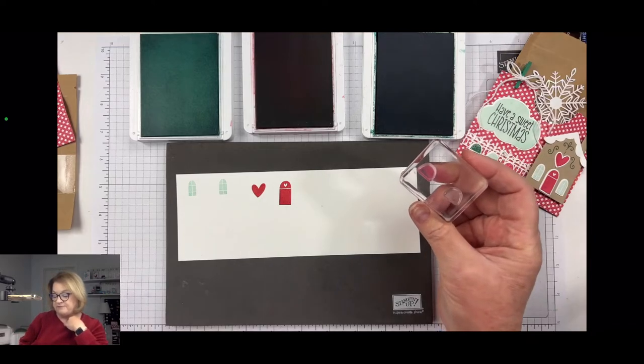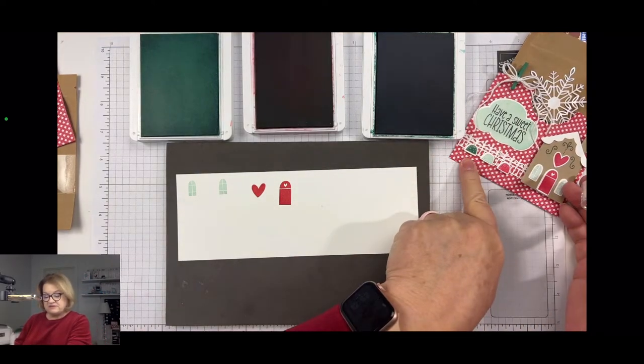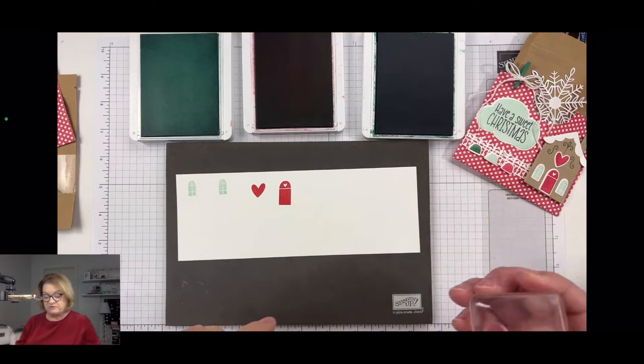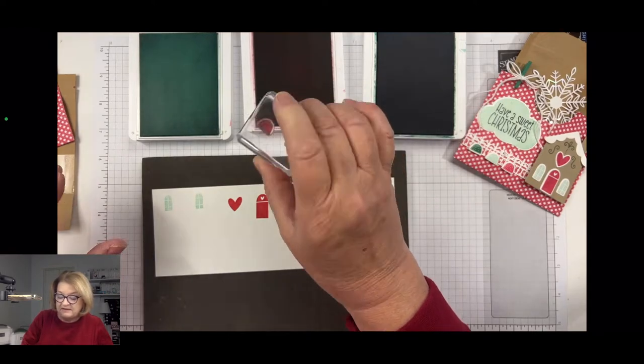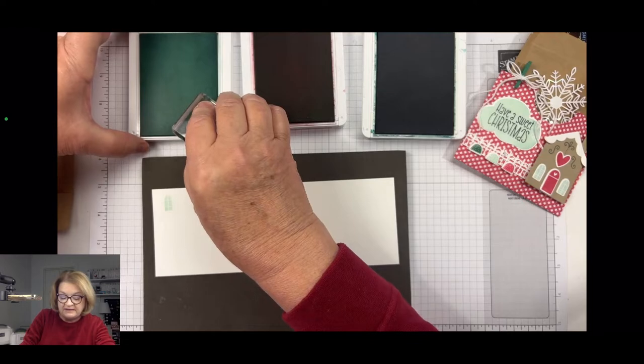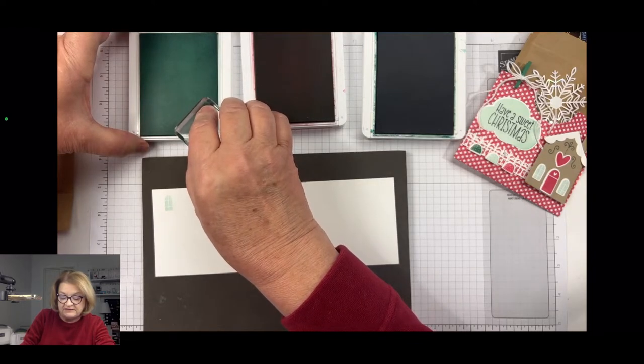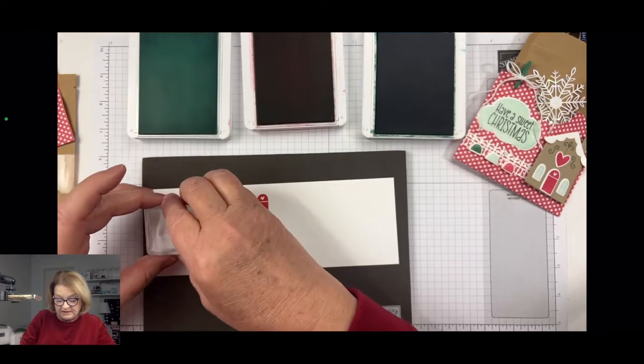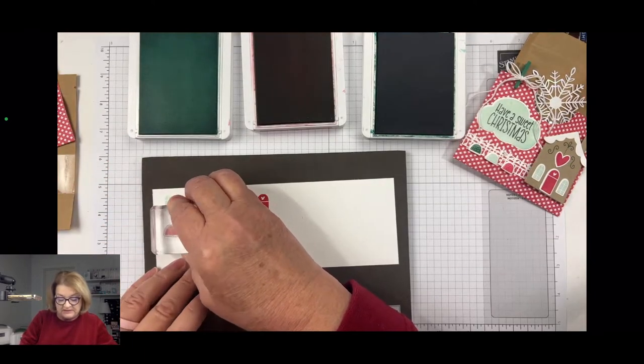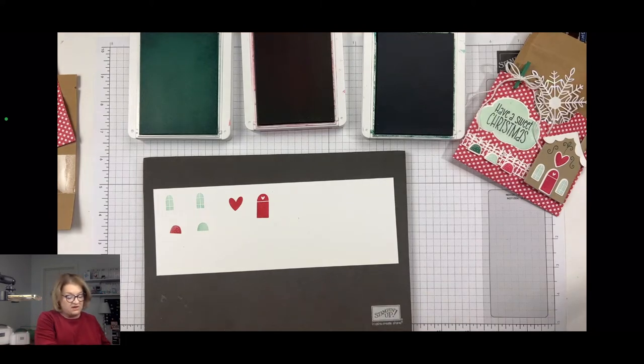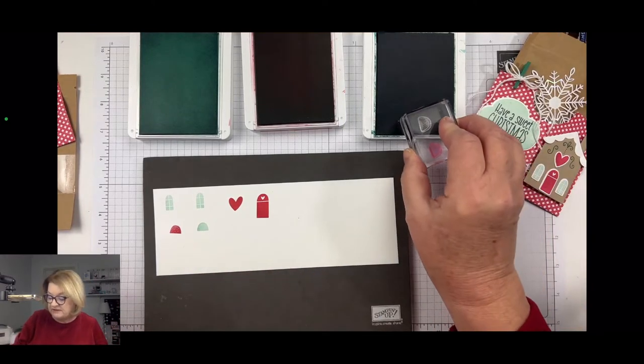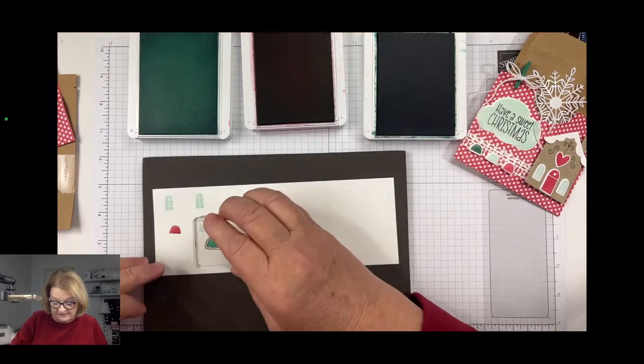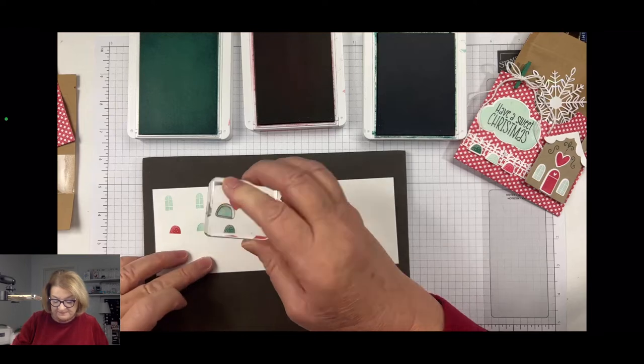And I'm spacing these apart so that there's room for the dies. So I can run this through my die machine, my die cutting machine, all at once. One turn, right? Now, for the gumdrops, I've got three colors. I've got the shaded spruce, the pool party, and the real red. So I am going to just ink up one in the real red and one in the pool party very carefully, and there we go. And then I will clean that off, and I will get my shaded spruce gumdrop. I love how the gumdrops look like little hedges, little evergreen hedges.